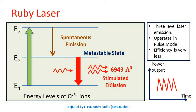Light amplification due to stimulated emission of radiation occurs, and we get a laser beam of wavelength 6943 angstroms. Ruby laser is a 3-level laser system, so for its operation, energy levels E1, E2, and E3 are involved. Lasing action occurs between energy level E2 and E1.